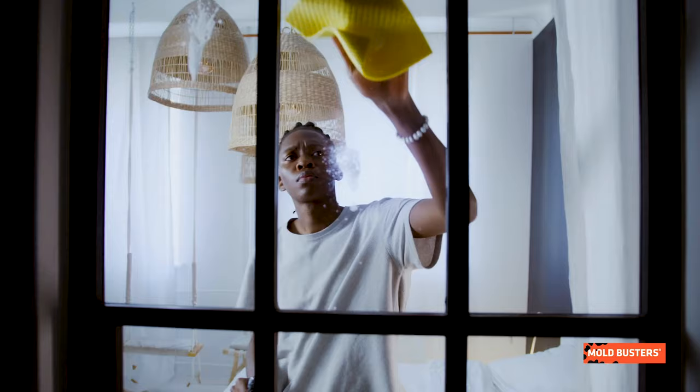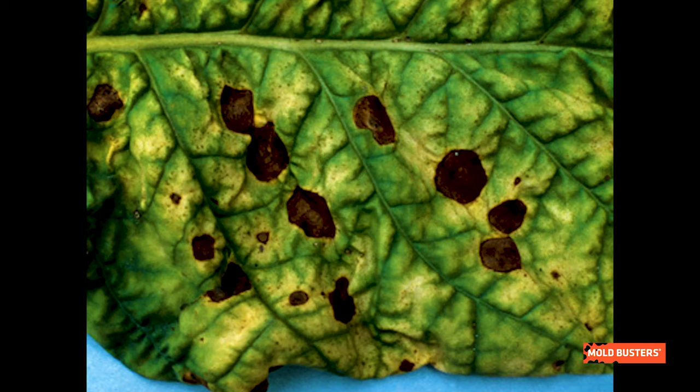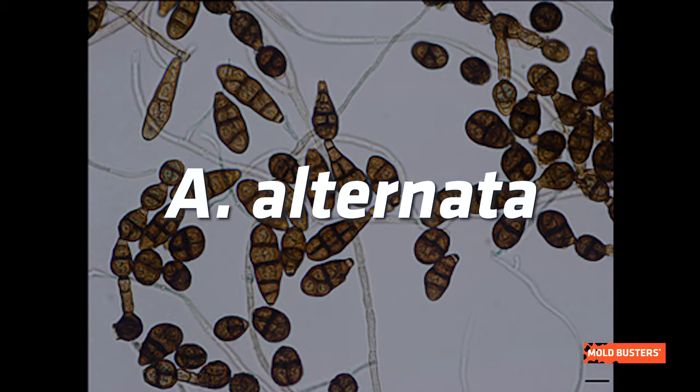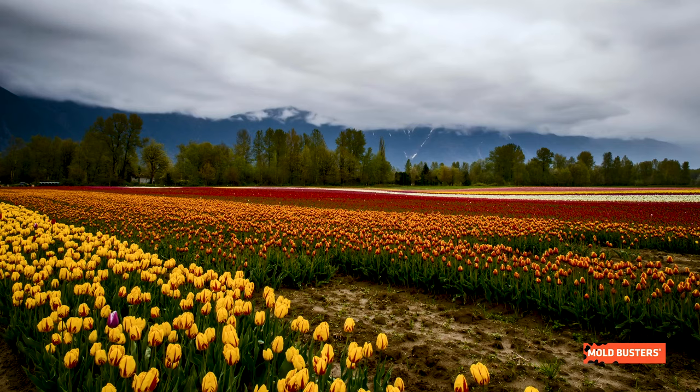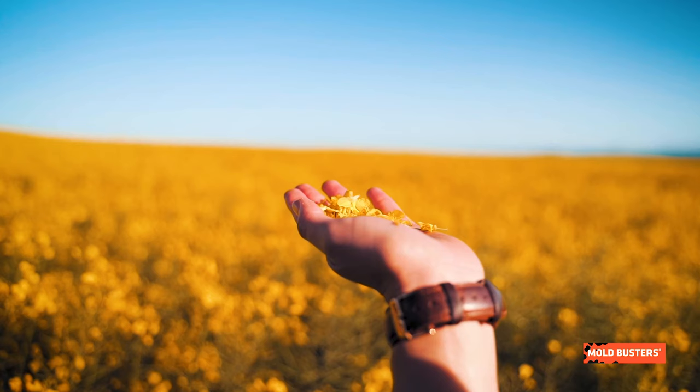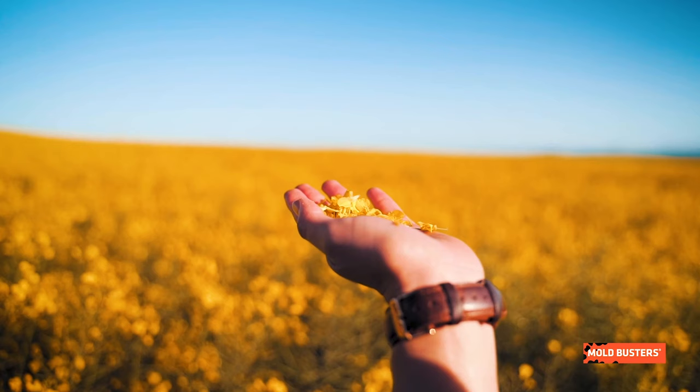Alternaria can be found on carpets, wallpapers, textiles, window frames, and air conditioning systems. These spores often originate from the outdoor environment. The most common species are Alternaria alternata and Alternaria tenuissima, which abundantly grow from spring through summer and are considered common allergens.